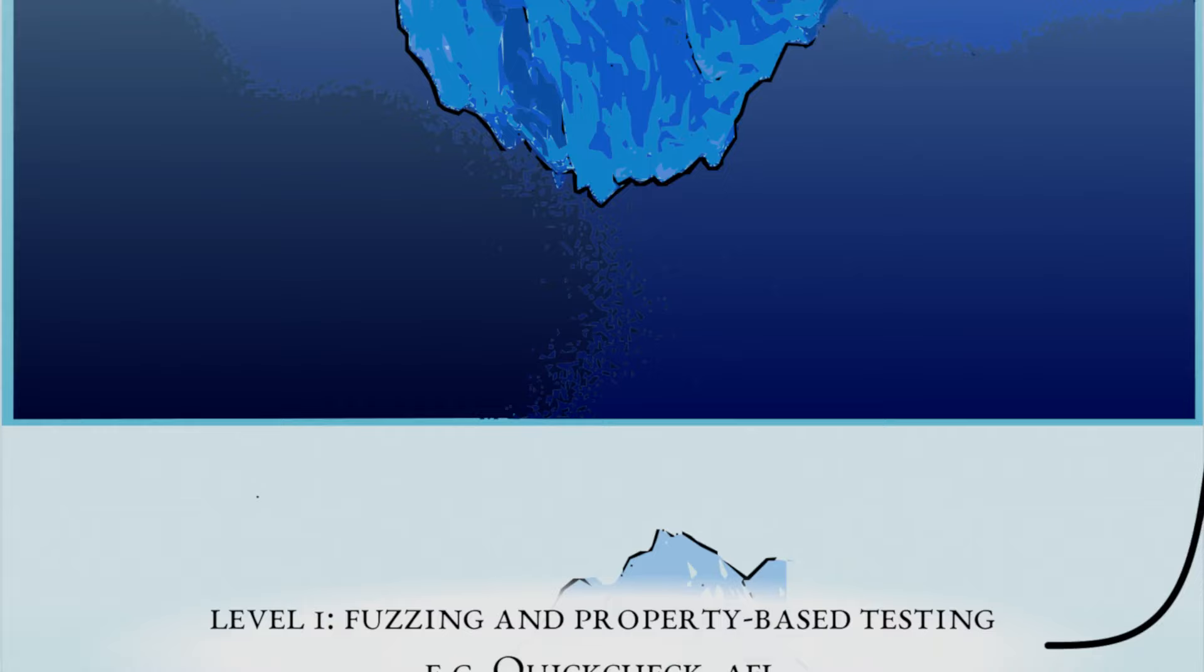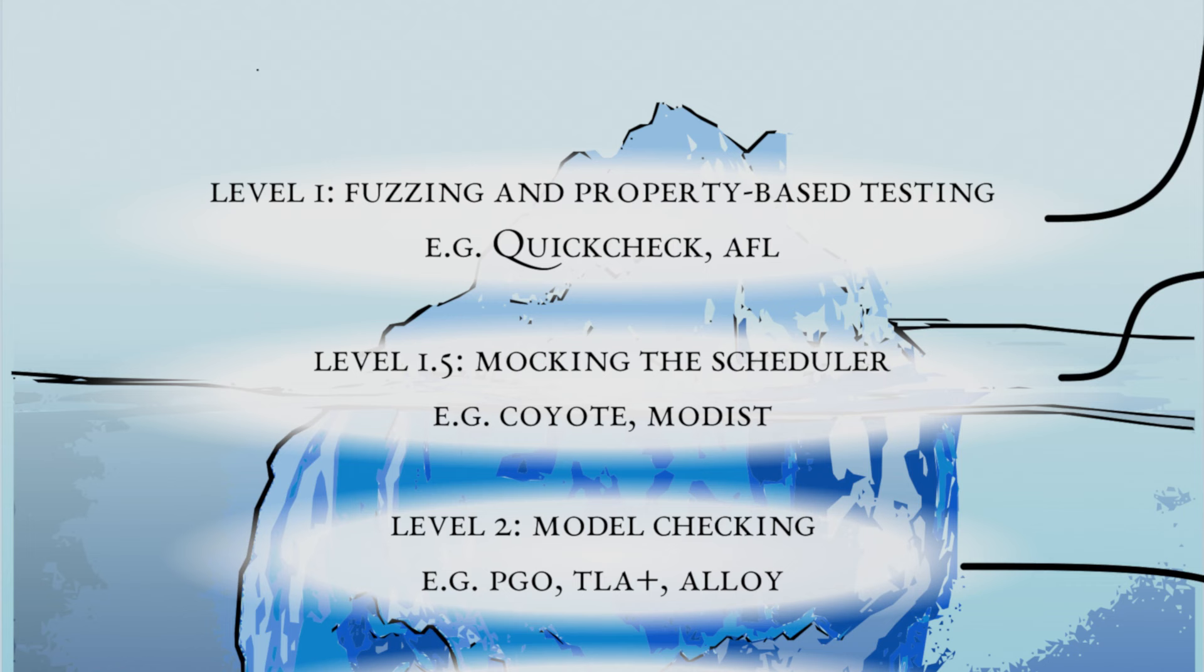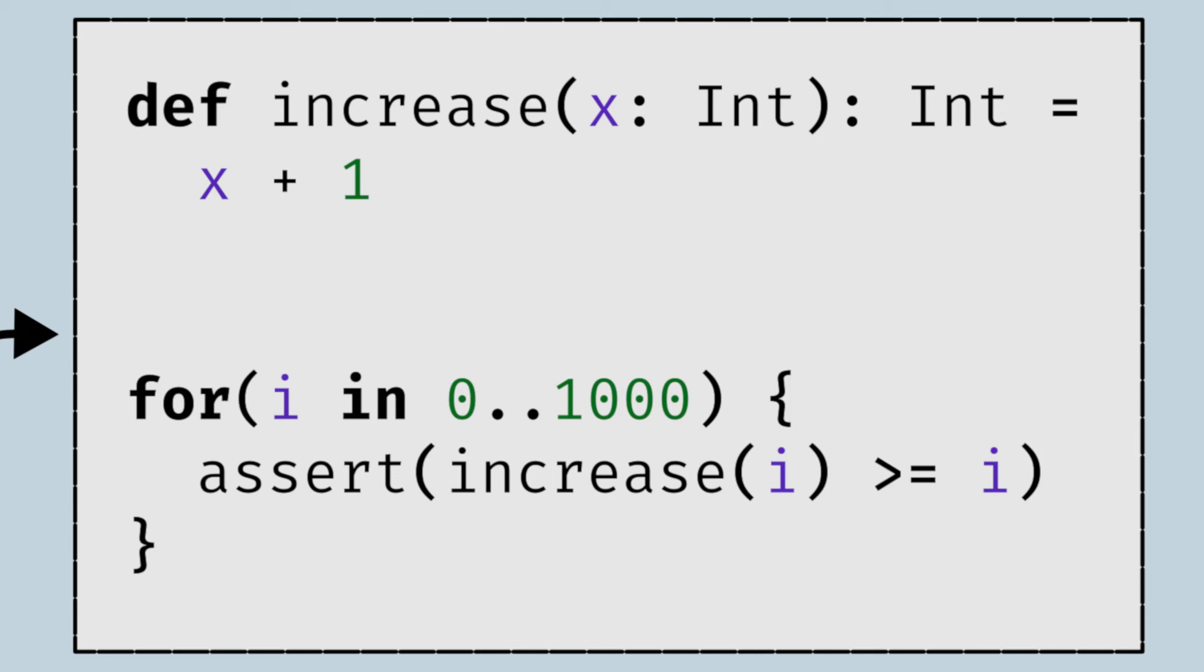Level 1, I call fuzzing and property-based testing. Related tools are things like Haskell's QuickCheck and its many descendants, or fuzzers which generate randomized inputs in interesting ways, like American Fuzzy Lop or AFL. To give a basic idea of how all this works, consider this extremely simple piece of pseudocode.